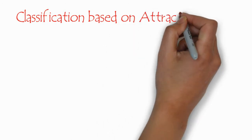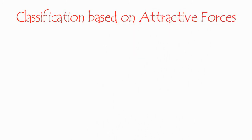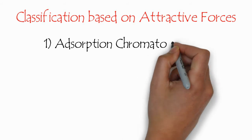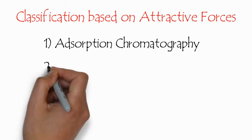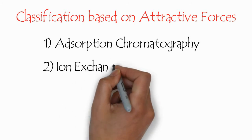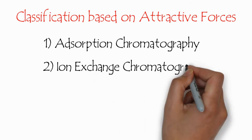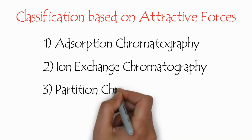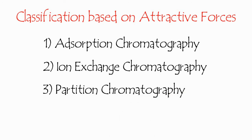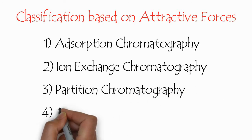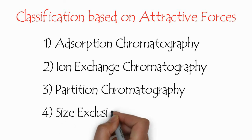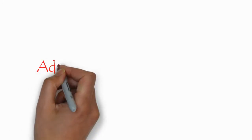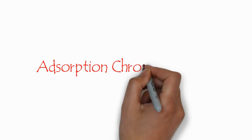The second type of classification is based on attractive forces. This includes four main types of chromatography. The first one is adsorption chromatography, in which the mechanism of separation is based on adsorption. The second one is ion exchange chromatography, in which separation is based on ion exchange principles. The third one is partition chromatography, in which separation is based on partition between the two phases. The fourth one is size exclusion chromatography, in which separation is based on the sizes of the molecules.